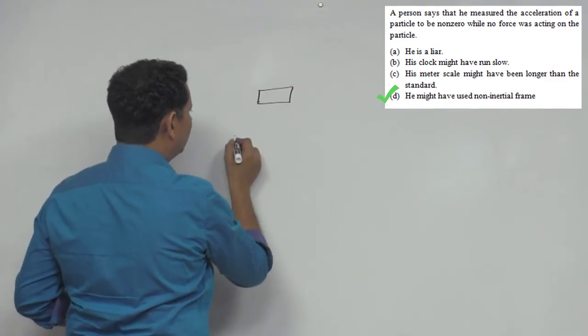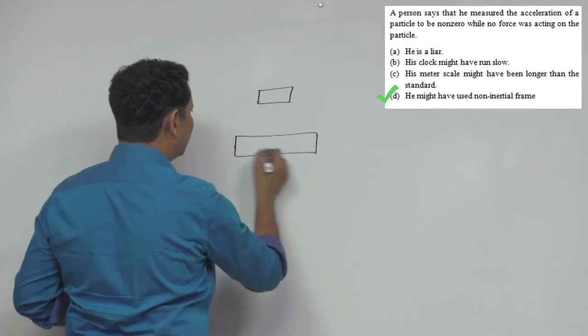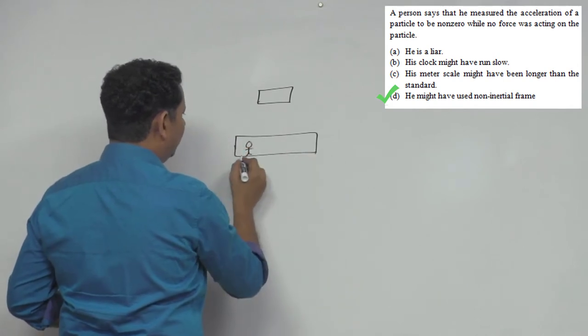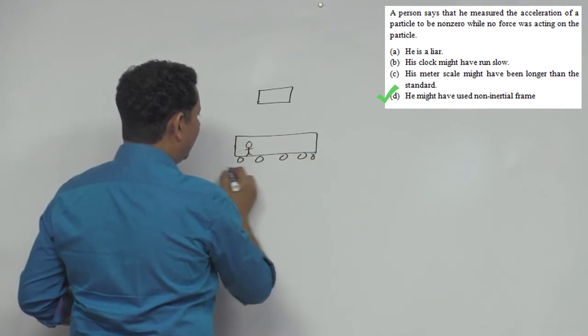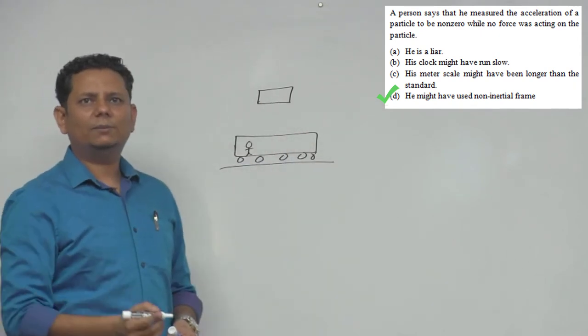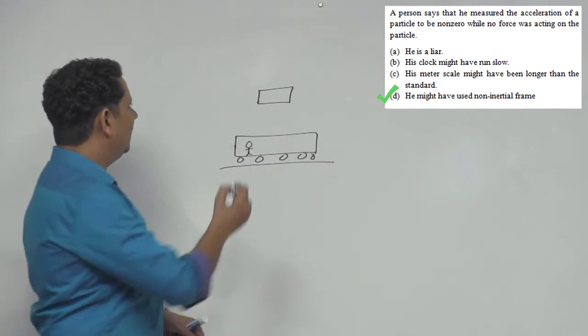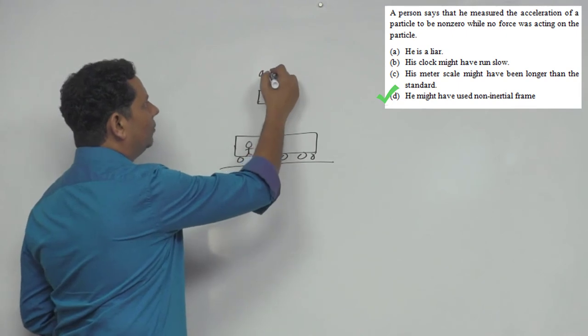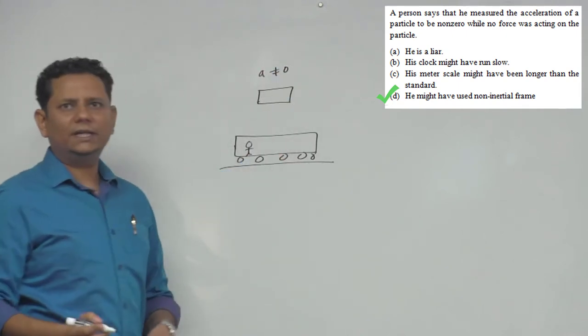This is the particle. Another person observed it from here. This is the person who is observing this object, this block. And this person said that its acceleration is not equal to zero. He reported this.